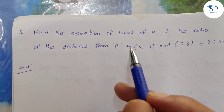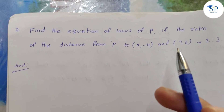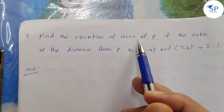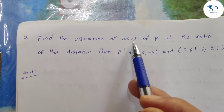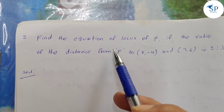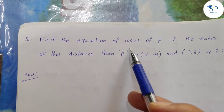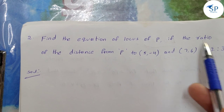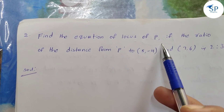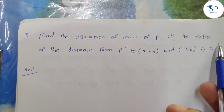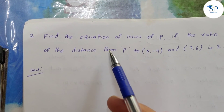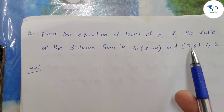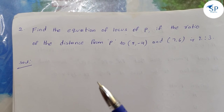If you are in the examinations, you will find the equation of the locus. Find the equation of the locus of P, if the ratio of the distance from P to (5, -4) and (7, 6) is 2 is to 3.